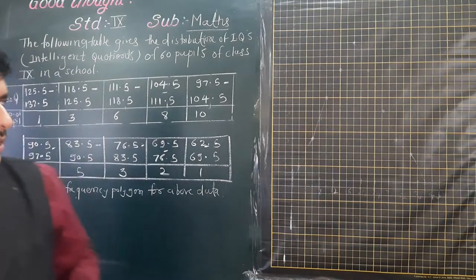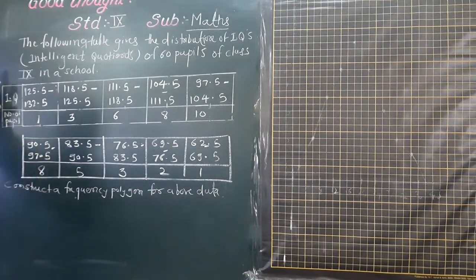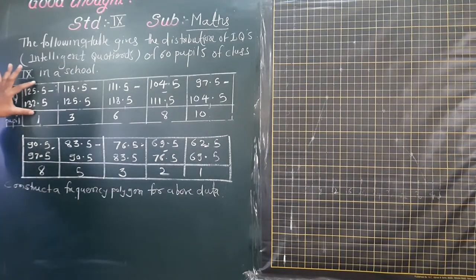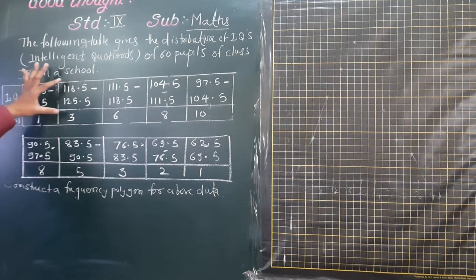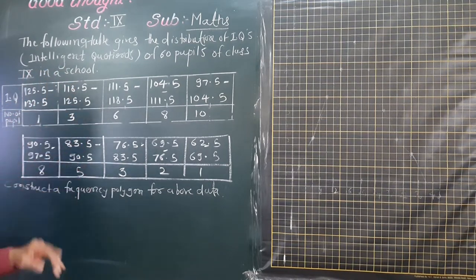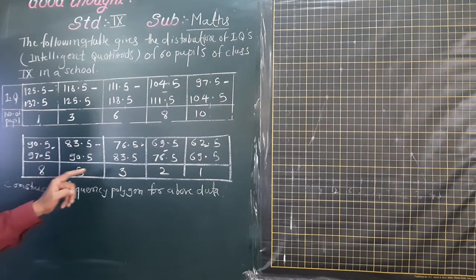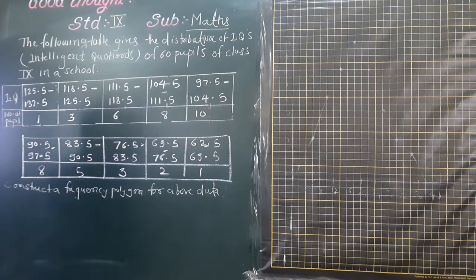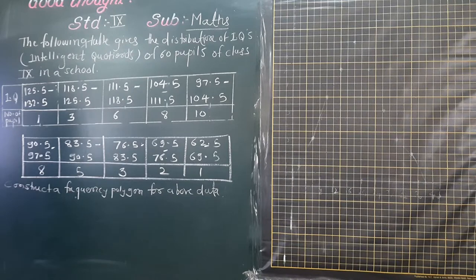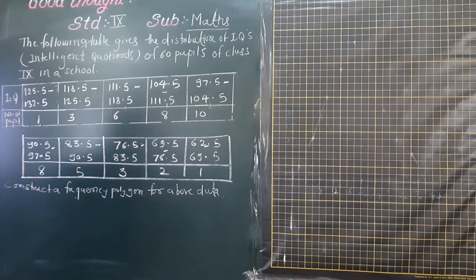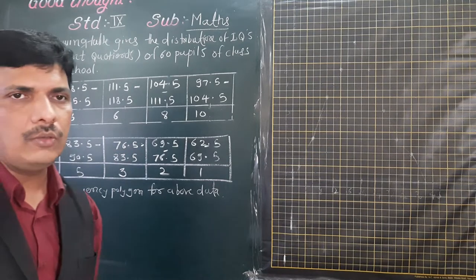The data is given in a table. The columns are IQ intervals and number of people. The intervals are given and the number of people are: 1, 3, 6, 8, 8, 8, 5, 3, 2, and 1. The instruction says: construct the frequency polygon for the above data. So here we need to construct the frequency polygon.